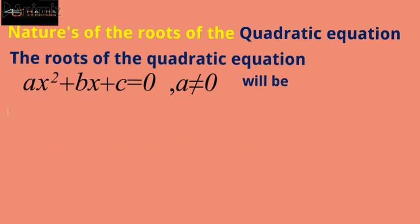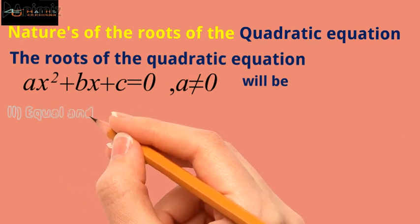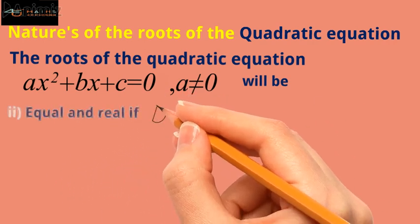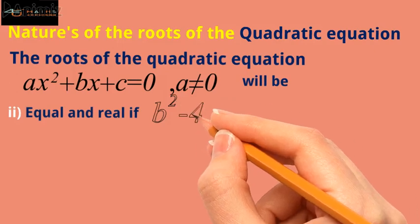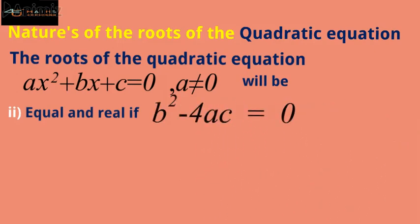Case two — the roots will be equal and real if b squared minus 4ac is equal to 0. Hence, if the discriminant of the quadratic equation is equal to 0, then the roots will be equal and real.